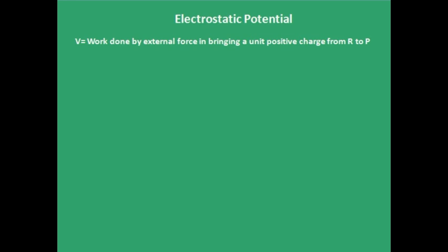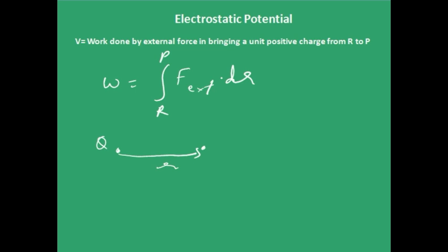Electrostatic potential is the work done by an external force in bringing the unit positive charge from a point r to a point p. The work done by the external force would be the integral of F external dot dr. Now I want to bring it from infinity to a point which is at a distance r from a point charge Q. The force at every point at distance r-dash from the charge would be the electrical force: k times Q times small q — which is 1 since it is a unit charge — divided by r-dash squared.